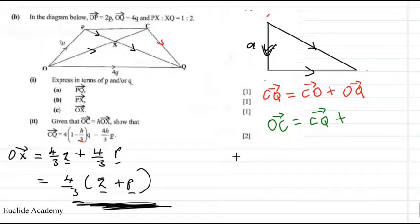That is OC plus CQ, plus CQ, I think this could be much easier, it should give me OQ. This should be plus, not negative. CQ, it should give me OQ.